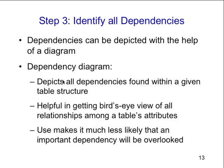Most of the rules to get into second normal form have to do with identifying which relationships exist and which attributes are identified as the key or the candidates — which is where the word 'candidate' came from. Candidates are identifiable keys that form dependencies between the data. The dependency diagram depicts all the dependencies found within a given table structure, helpful for getting a bird's eye view of the relationships among table attributes, and makes it less likely to overlook important dependencies.